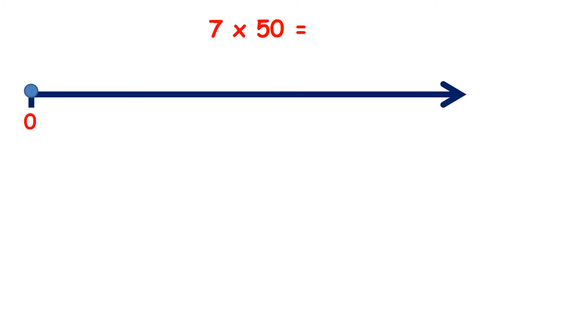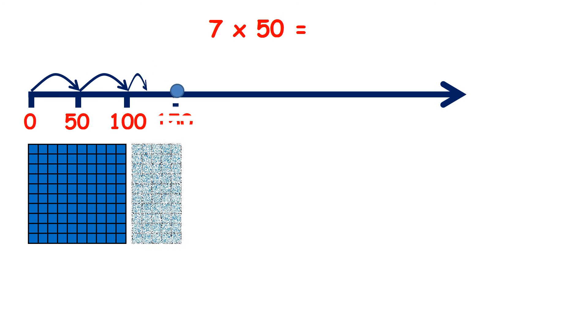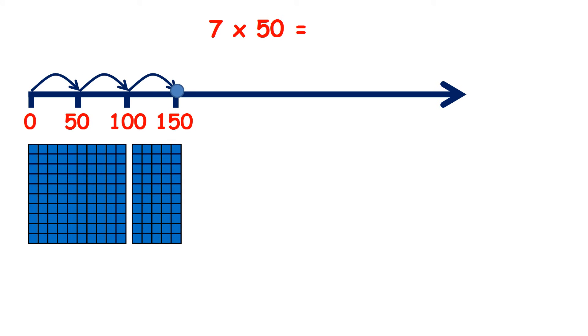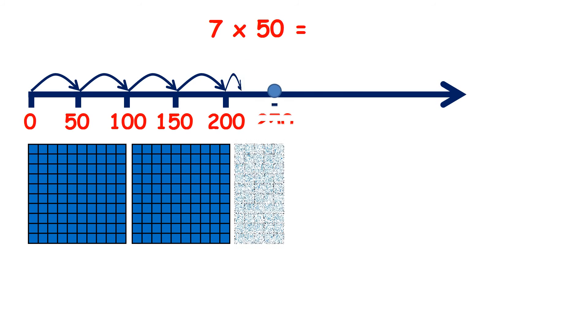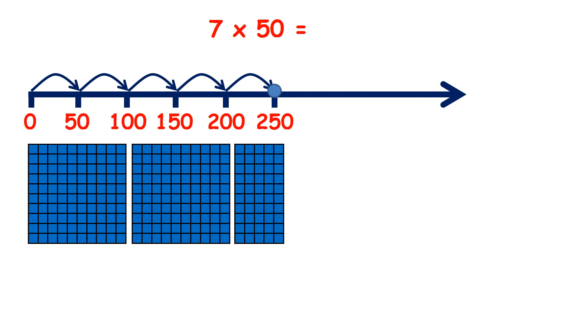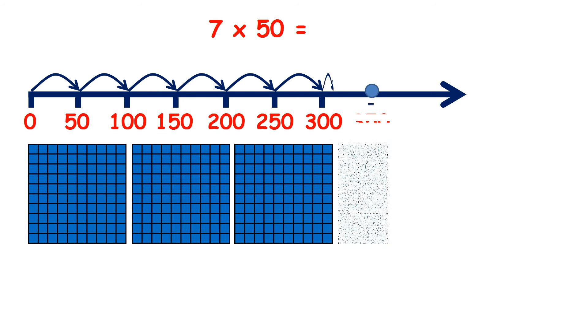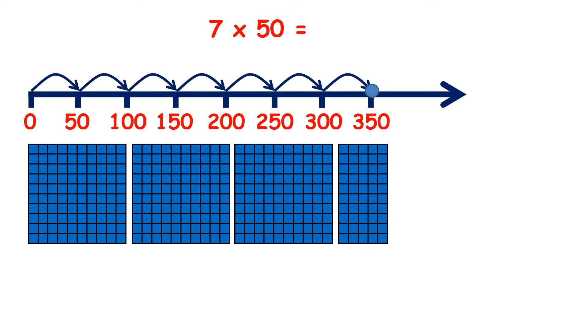So, let's do some practice questions. If we want to know 7 times 50, we can count up in steps of 50 seven times. So, 50, 100, 150, 200, 250, 300, 350. So, now we've made 7 jumps of 50 on our number line, so our answer is 350.